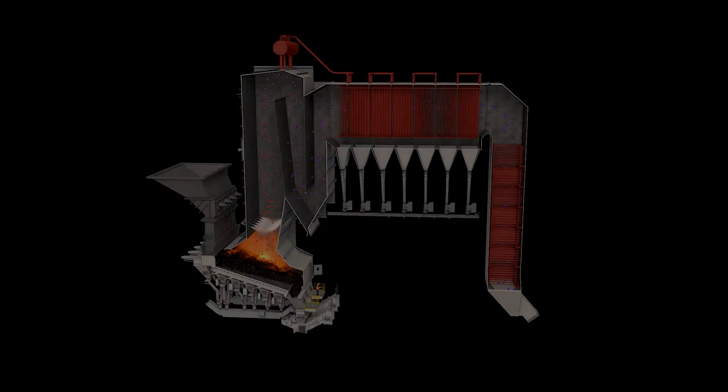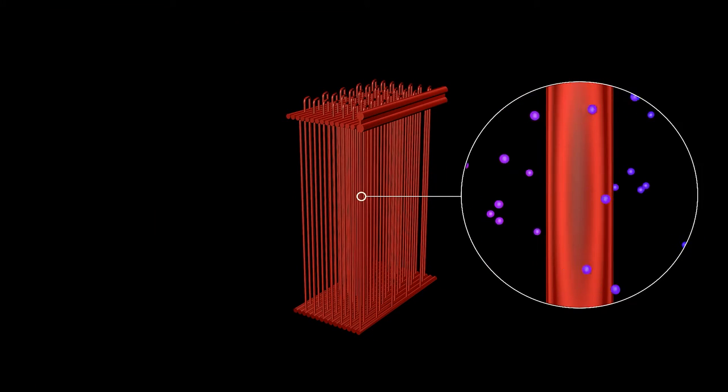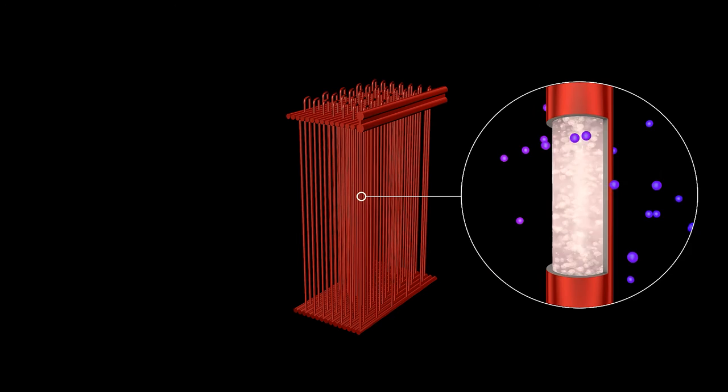The thermal energy in the flue gases is used to produce superheated steam, which is expanded in a turbine generator to generate electricity.